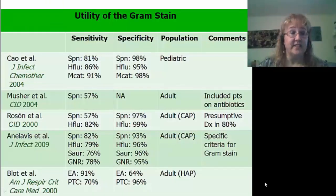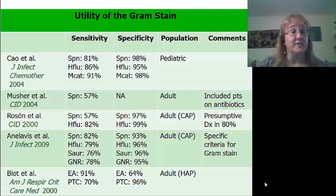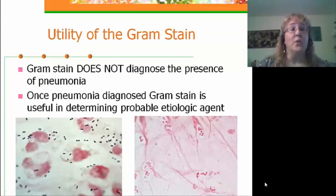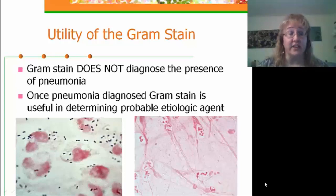Recent studies on the utility of the gram stain show that for most common community-acquired pathogens such as Streptococcus pneumoniae, Haemophilus influenzae, and Moraxella catarrhalis, the gram stain has a relatively high sensitivity. For the Musher study in 2004, where sensitivity for Streptococcus pneumoniae was relatively low at 57%, the study included patients on antibiotics. One of the most important things to remember is that the gram stain itself does not diagnose the presence of pneumonia — pneumonia is a clinical and radiologic diagnosis. But once the diagnosis of pneumonia has been made, the gram stain is useful in determining a probable etiologic agent.